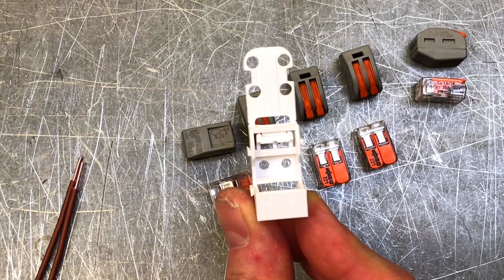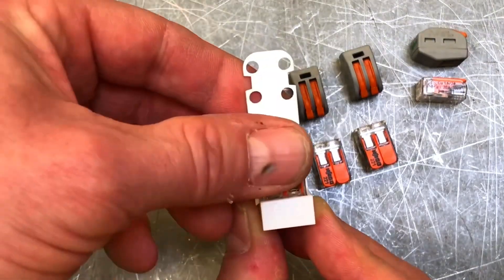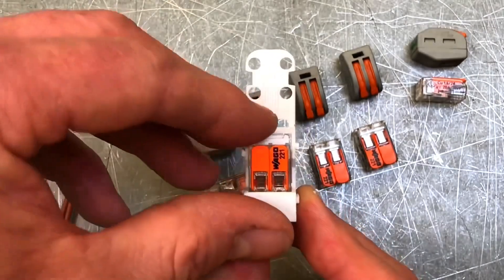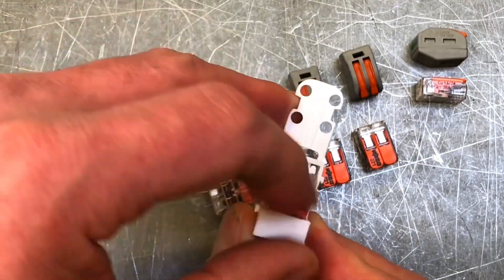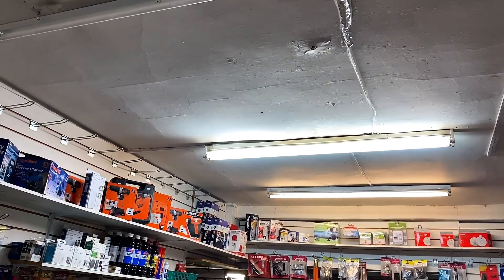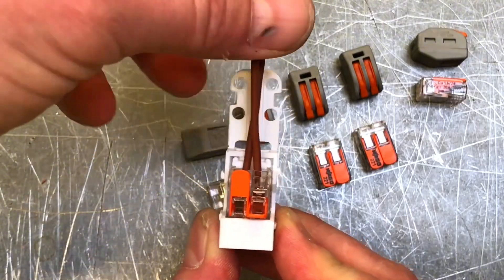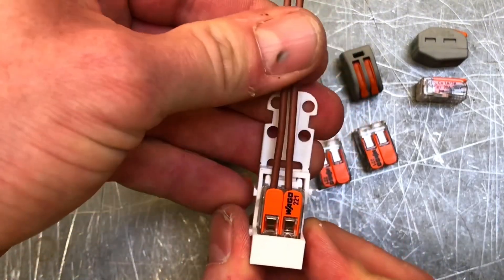Wago have brought out a mounting carrier for the 221 series. We just popped in a two conductor connector. If we're using one of these and maybe won't get looping terminals in, let's say, a light fitting, this can be mounted onto the base of the light fitting and then the connector placed in and used as a normal looping terminal. This means the actual connection won't be floating around in the light fitting.